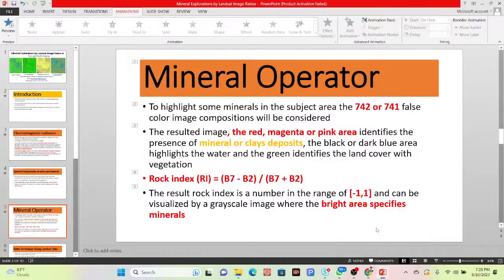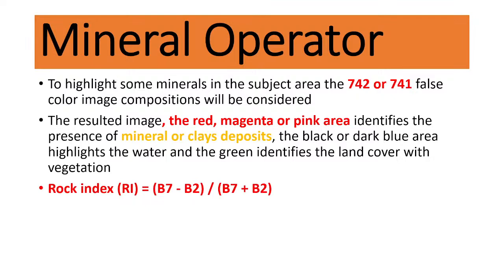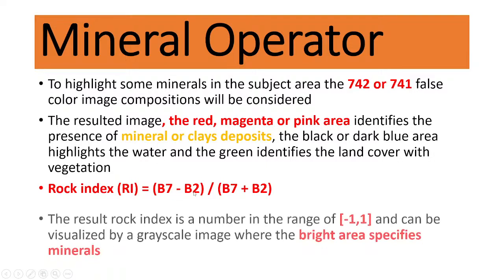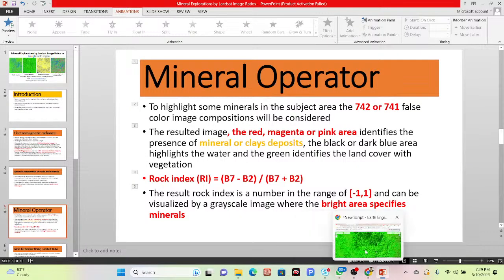After applying this band combination, I can easily get the result. Next, we talk about the rock index. The rock index is a specific normalized difference between band 7 and band 2, using the formula: (B7 − B2) / (B7 + B2). The rock index result is a number in the range of negative 1 to positive 1 and can be visualized as a grayscale image where the bright areas specify the mineral. You can see the rock index result in the code editor.